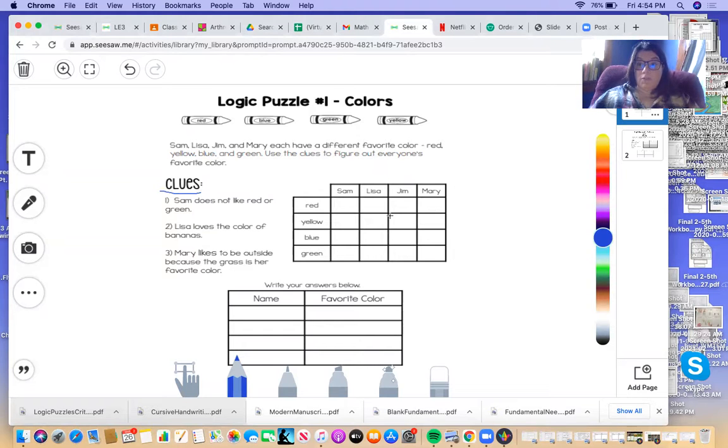This is your little grid over here that you're going to use to figure out. When you know that something does not belong, or it's not the correct answer, I always put an X. And then if I know that is the one, then I put a star.